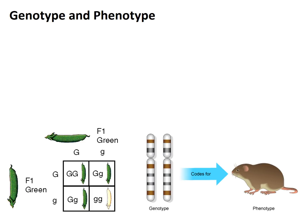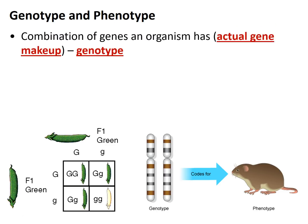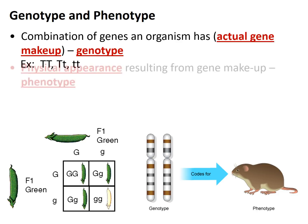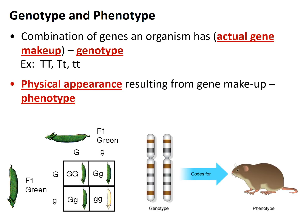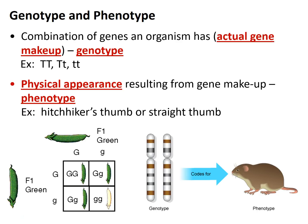Now we have some different vocabulary: genotype and phenotype. Genotype is talking about your genes — what's on the inside. Phenotype is talking about your physical appearance — what's physically expressed, what you can see. The combination of actual genes is the genotype, so that would be TT, Tt, or tt. The physical appearance — hitchhiker's thumb or straight thumb — is the phenotype.